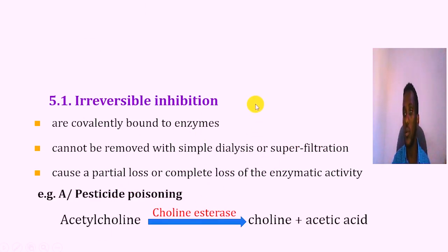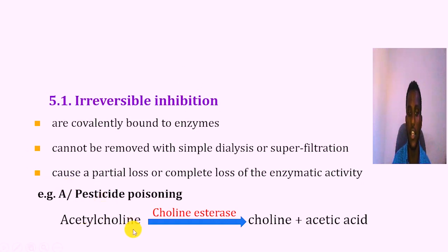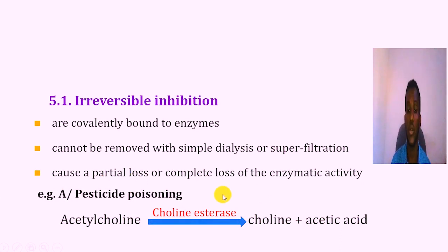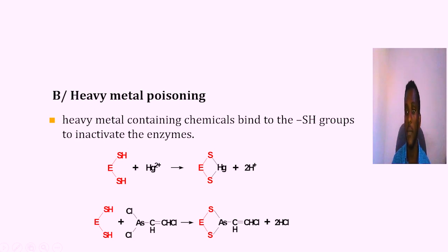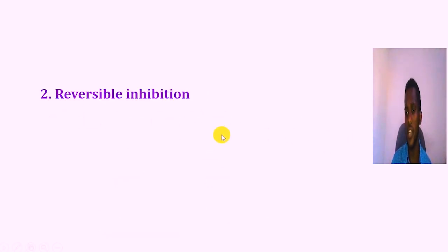For example, pesticide poisoning is almost always targeting a specific molecule. The activity is irreversible. For example, acetylcholine — the acetylcholinesterase enzyme can convert acetylcholine into choline plus acetic acid. In this reaction, the enzyme activity is completely lost. Another example is heavy metal poisoning — heavy metal such as mercury (Hg). The sulfhydryl (SH) group will bind to mercury, hydrogen is removed, and HG and sulfur bind to it. This enzyme activity will stop completely. This is irreversible inhibition, where enzyme activity is temporarily or permanently lost.